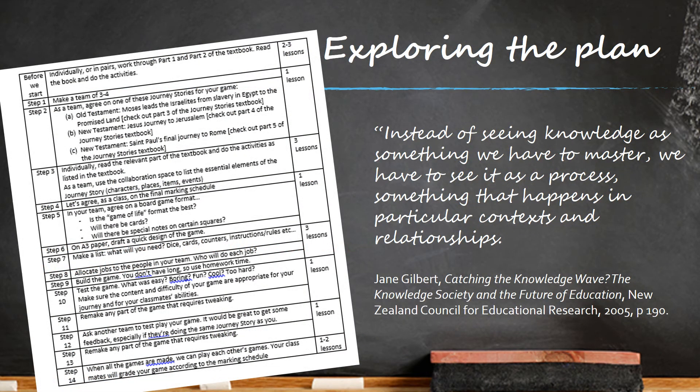Let's look at the actual unit plan I want to try out in Term 2. This is it on the left here. You can see there are 14 steps I've come up with to design board games, and on the right I've allocated numbers of lessons I think will be needed. I promise you, the students will never get to see this page. Instead of seeing knowledge as something we have to master, I want to see it as a process — something that happens in a context. That's the board game and in the relationships of working in class. The old system was: knowledge is a noun, something to get even if you didn't really want it or need it.